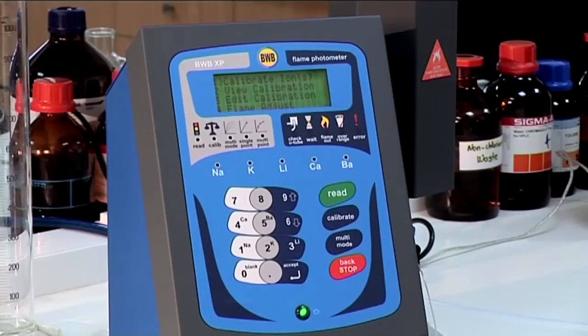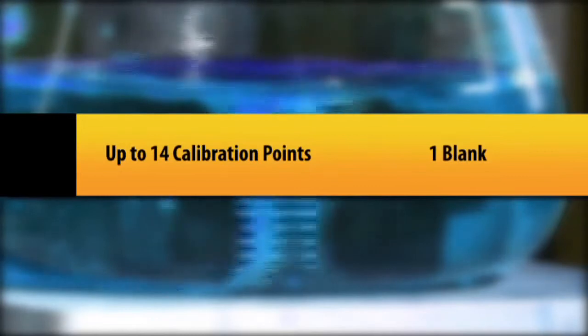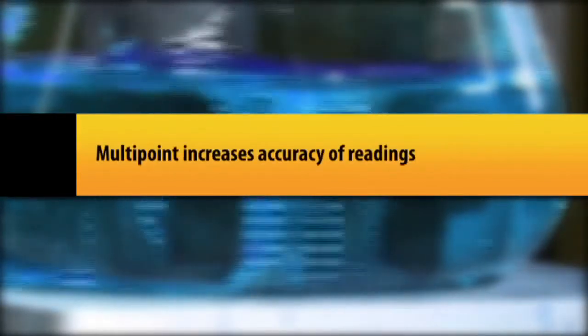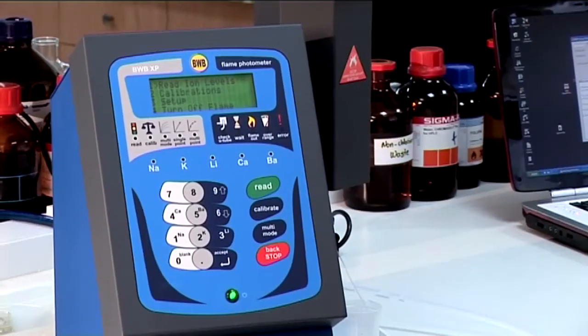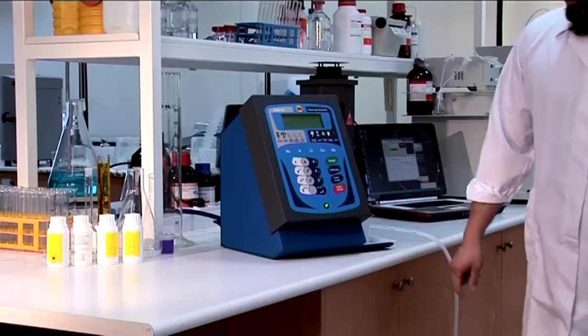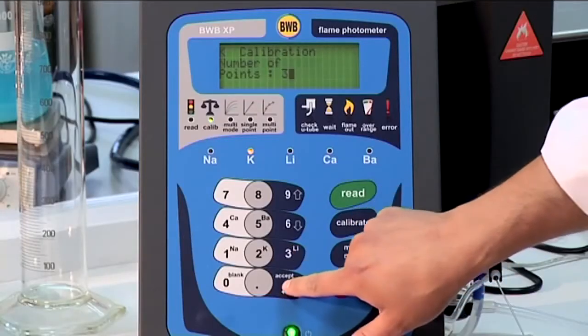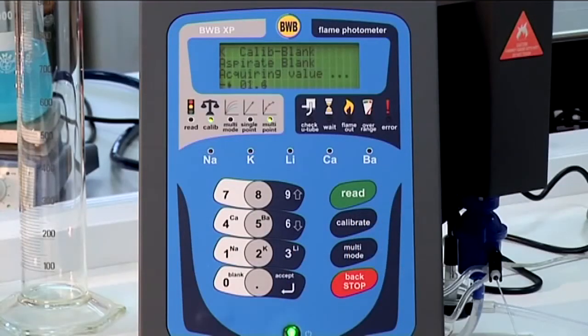The BWB XP allows us to enter as many as 14 calibration points plus the blank, so we can bracket our expected unknown sample values very closely, thereby increasing the precision and accuracy of the readings. The process is similar to the single point calibration, but when we are prompted for the number of points, we will enter 3. Run the blank as before.